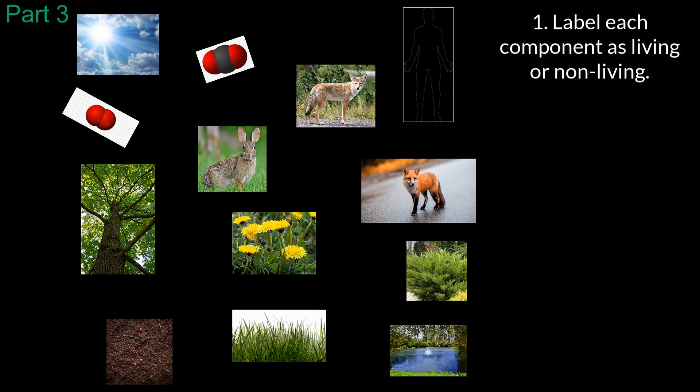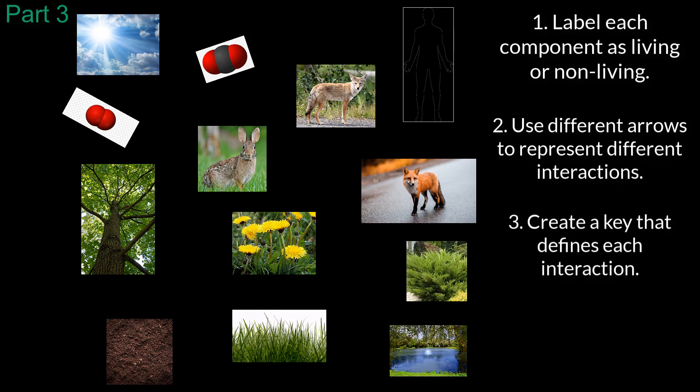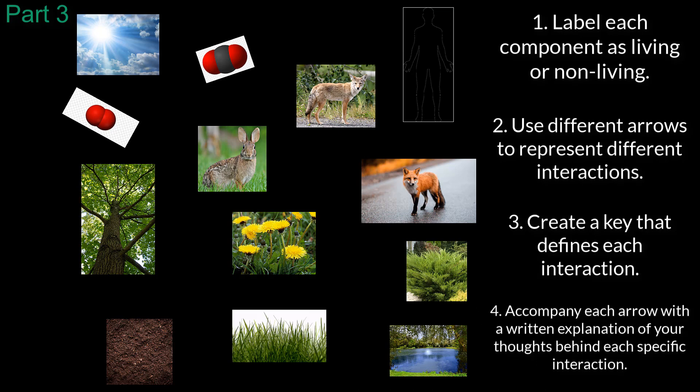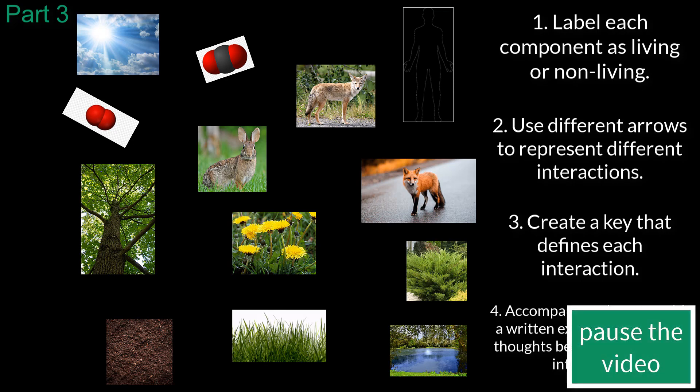Rule number one, label each component as living or non-living. Rule number two, use different arrows to represent different interactions. Rule number three, create a key that defines each interaction. Rule number four, accompany each arrow with a written explanation of your thoughts behind each specific interaction. Pause the video now and complete your new model.